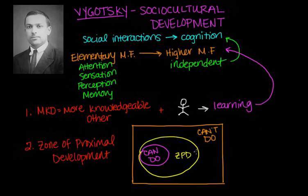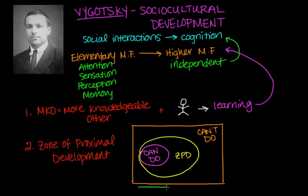For example, I couldn't solve a jigsaw puzzle by myself when I was little, but I was able to solve it following the interaction with my father. The ZPD involves interaction with the MKO, and eventually I developed competence in that skill that I could also use in the future. That arrow represents all of our learning and development.